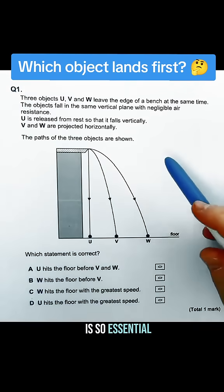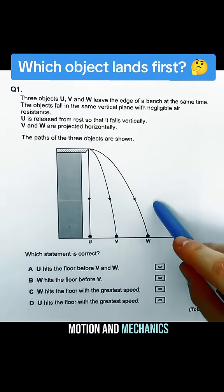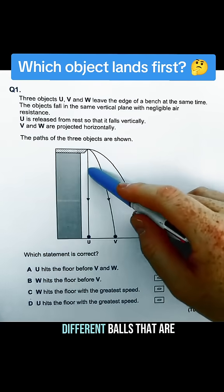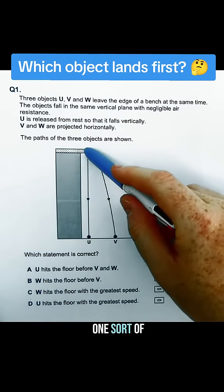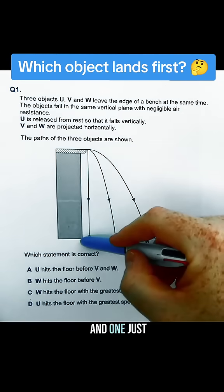Understanding this question is essential to the projectile motion and mechanics topic. We've got three different balls that are each leaving the edge of the bench at the same time. One's being projected horizontally, one's sort of downwards a bit vertically, and one's just being dropped.